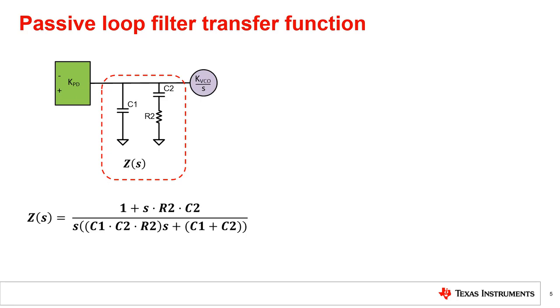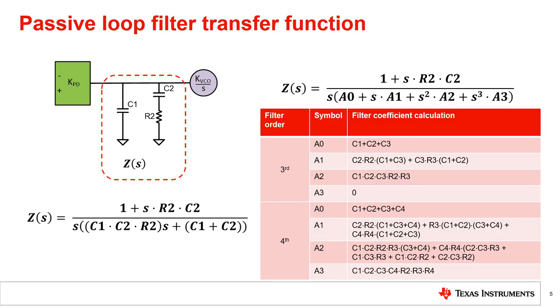You can calculate the transfer function of a third and fourth order loop filter as well and you will see that you can generalize and simplify the transfer function through the following equation. For the second order loop filter, A3 equals zero, A2 equals zero, A1 equals C1 times C2 times R2, and A0 equals C1 plus C2. The table shows what values these constants take for third and fourth order loop filter. You can try to calculate the transfer function of a third order loop filter and see if it matches the table.